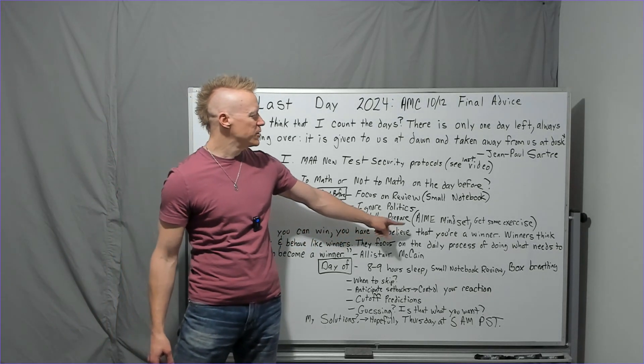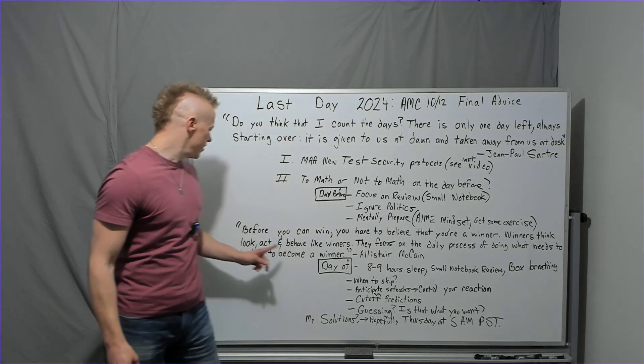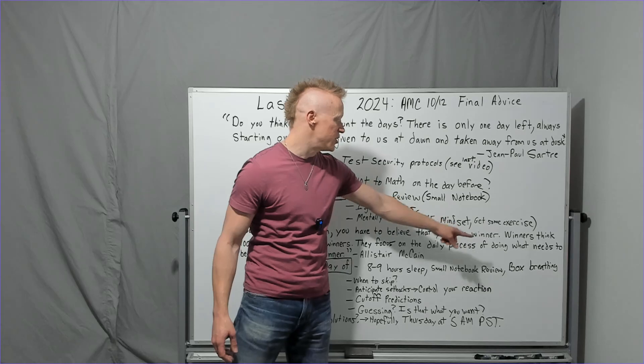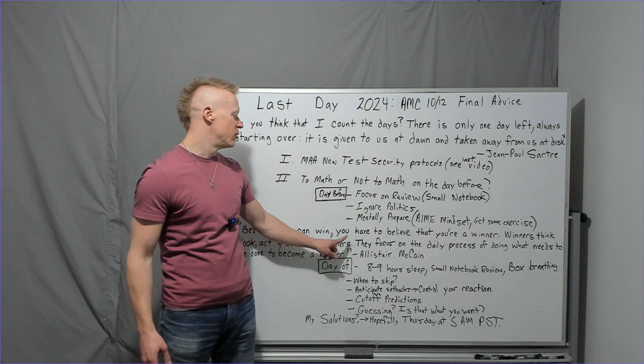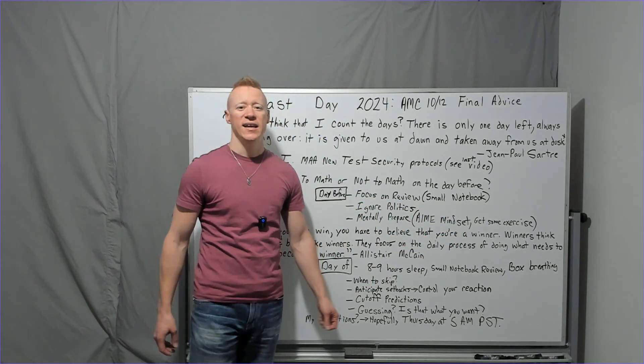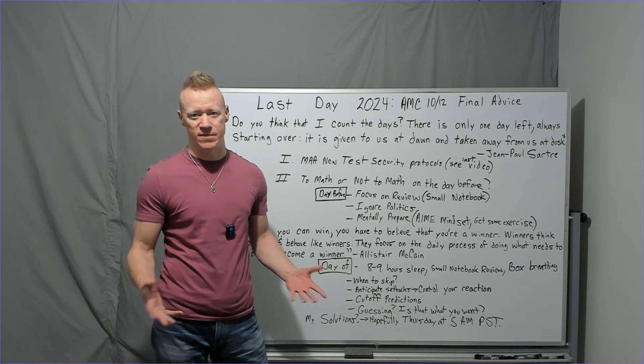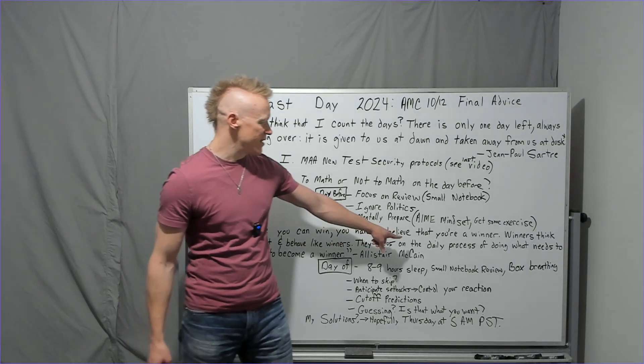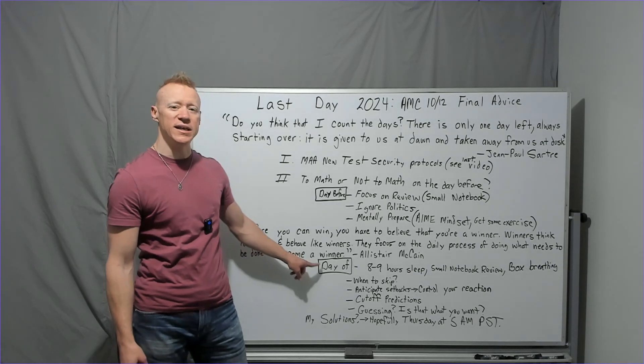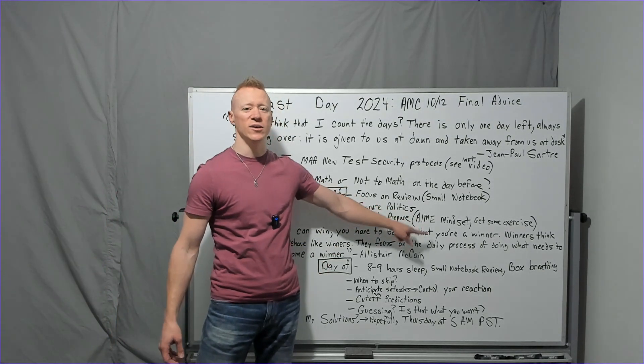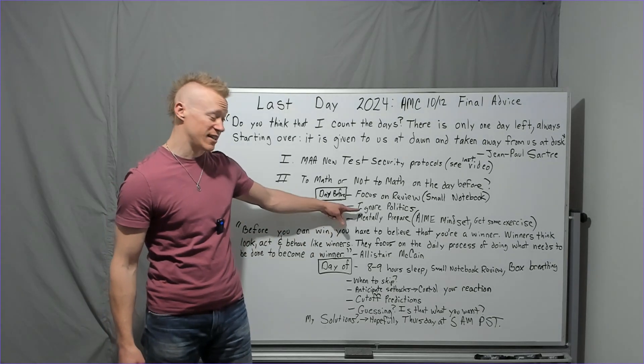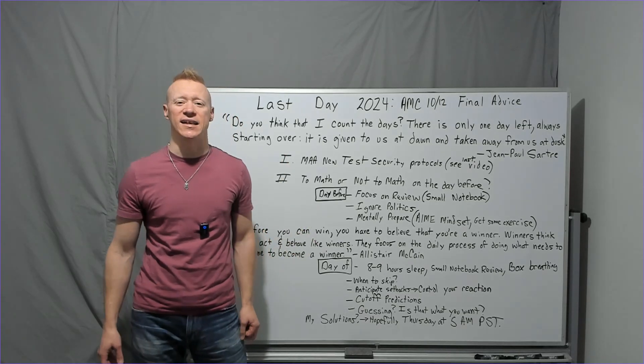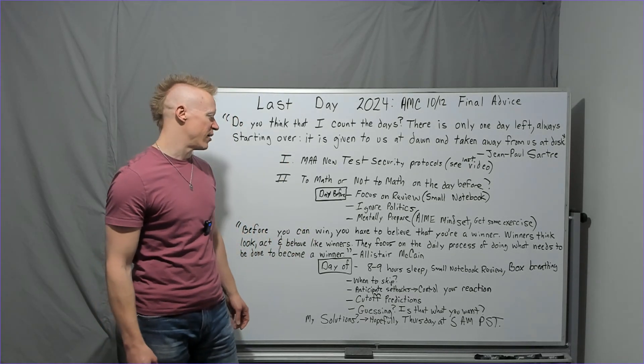Before you can win, you have to believe that you're a winner. Winners think, look, act, and behave like winners. They focus on the daily process of doing what needs to be done to become a winner. Alistair McCain, he's a famous speaker, and he's a leadership mentor and things like that that he does around the world. And, again, focus on what the daily process of doing what needs to be done to become a winner. That's a lot what this video is about. And it's not focusing on things that you can't do anything about and that aren't going to matter right now. What matters is right now, the contest, it's on Wednesday, and you need to prepare for that.